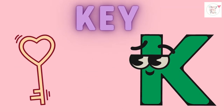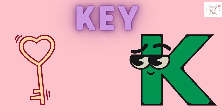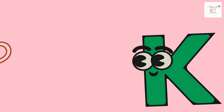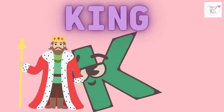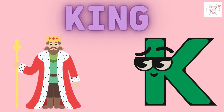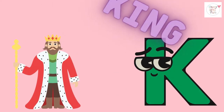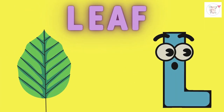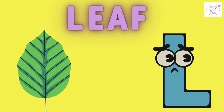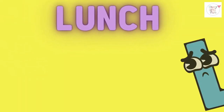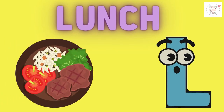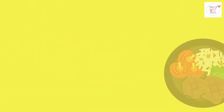K is for key, k-k-key. K is for king, k-k-king. L is for leaf, l-l-leaf. L is for lunch, l-l-lunch.